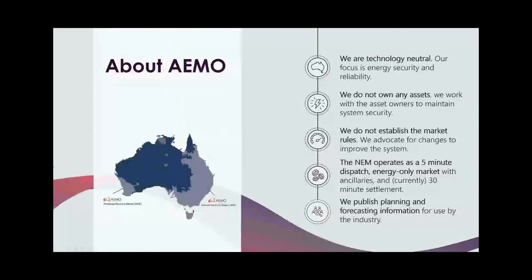First, a little background about AEMO, the company I work for. The Australian Energy Market Operator operates both the National Electricity Market and the Wholesale Electricity Market. The NEM is on the east coast of Australia, and the WEM — the Wholesale Electricity Market — is on the west side of Australia in WA. We work with network service providers and participants to ensure the system is always secure, and we also run the energy and ancillary service markets, which set the price of electricity every five minutes. We are a not-for-profit company, a joint body of both government and industry agencies.